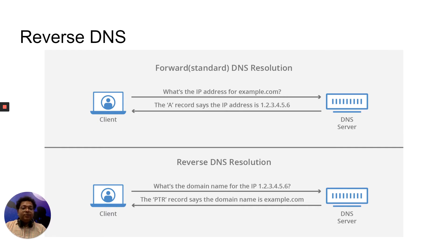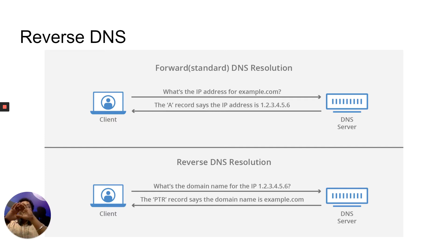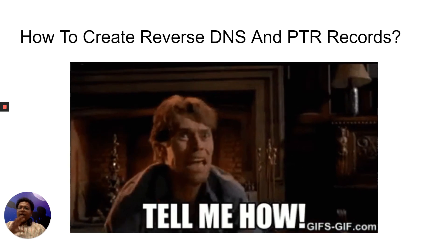Here is why this matters: say you have a server on AWS sending emails from example.com using an AWS IP address like 1.2.3.4, which resolves to something like ec2.aws.com. For anti-spam engines, this looks like an unauthorized email setup, because the IP being used to send the email does not resolve to example.com — the real sender — but instead resolves to another domain, ec2.aws.com.